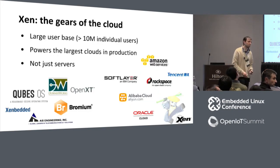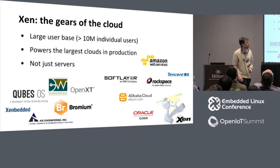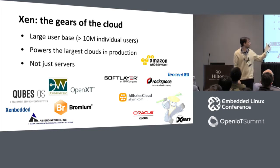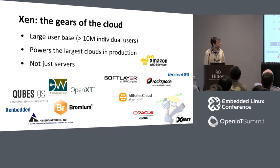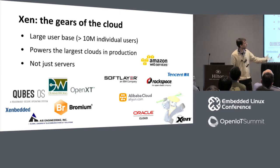Xen is pretty popular on the cloud — large public clouds based on Xen include Amazon AWS, Tencent, Alibaba Cloud, SoftLayer, and others. But Xen is not just used on cloud and servers. There are products based on Xen for laptops and desktops, for example QubeOS — a famous Linux and Xen-based secure environment — and Bromium, for a secure browser experience on Windows. There are also ARM-based projects: companies like Dornerworks provide services on top of Xen on ARM and Xen embedded.